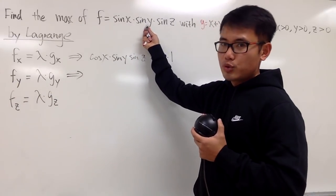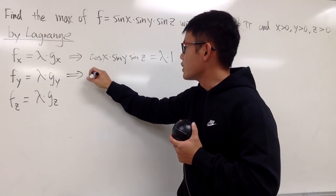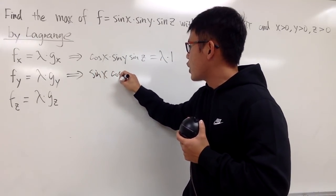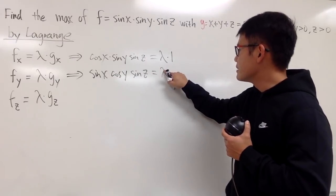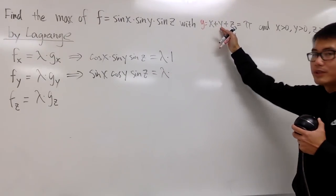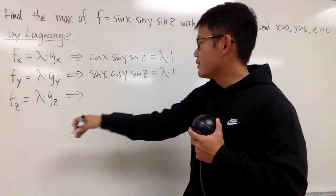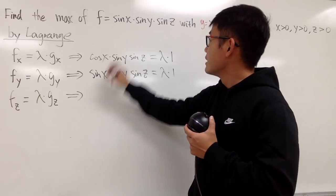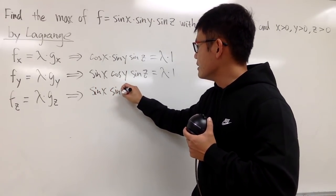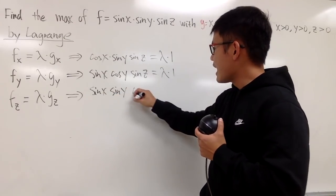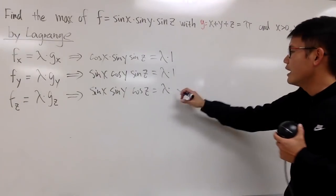For f sub y, y is now the variable, so it becomes cos y, and the other two stay. We have sin x times cos y times sin z, and this equals lambda times 1. Then f sub z: we get sin x times sin y times cos z, and this equals lambda times 1 as well.